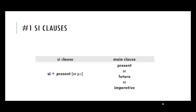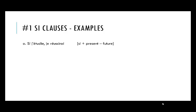Let's look at number one si clauses. If the si clause is in the present tense, the main clause will mainly be in the future. It can be in the present, the future, or the imperative, but most often you'll see it in the future — just like the example 'If I study, I will succeed.' You'll note there's also the option of the passé composé in the si clause; if so, the main clause will be in the present, the future, or the imperative. For example: 'Si j'étudie, je réussirai' — if I study, I will succeed — the si clause is in the present tense and the main clause is in the future.